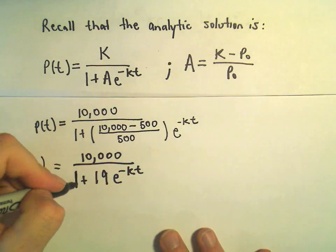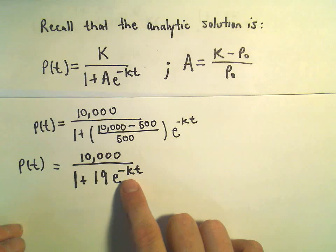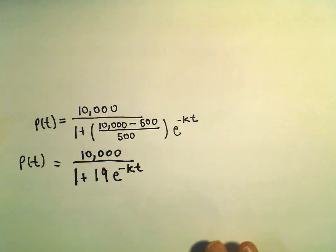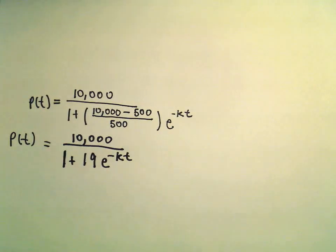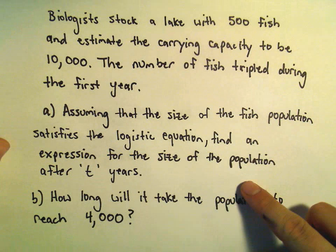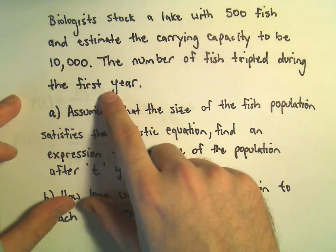So, the only thing we're really missing to make use of this formula is we don't know the constant k, we've got to figure that out. But they said that the population of this fish population tripled during the first year.